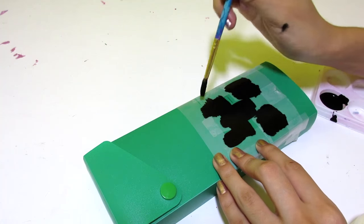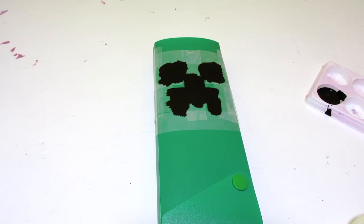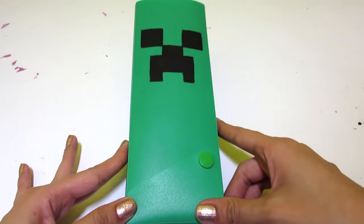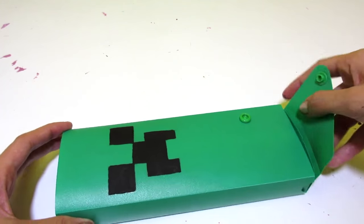For the final step, you want your paint to fully dry and then you want to remove the tape. So here's what your Creeper pencil case should look like when it's all done.